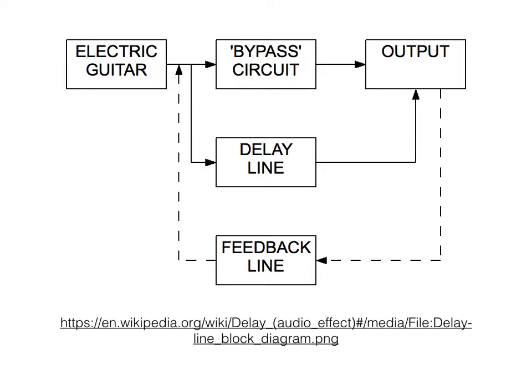A simple delay plays a second copy of the original sound source at a later time. A feedback delay doesn't just play back a straight copy of the sound source — it plays the combination of the original sound source and the previous copies as well. A multi-tap delay can trigger more than one copy, often within the rhythm of the music.